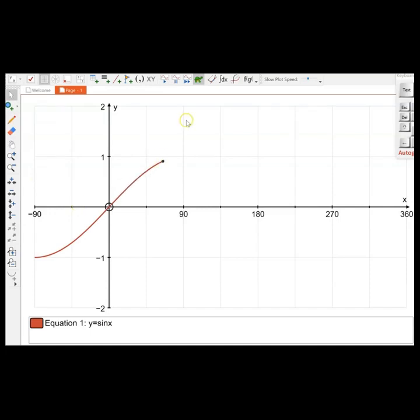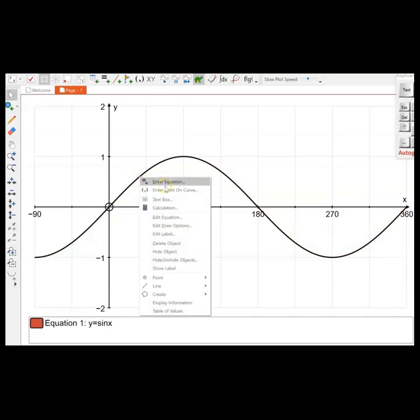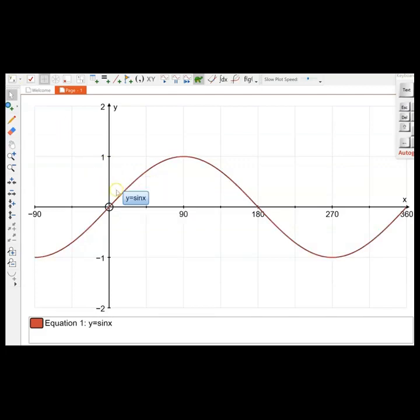It goes to 1 (that's the amplitude) and goes back down to the x-axis to cross 180 degrees, down to negative 1, and back again to 360 on the x-axis. Now we're going to enter another equation.